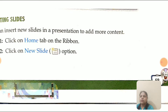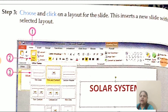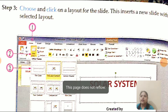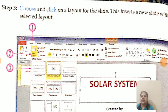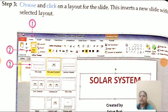Then you will click on New Slide — and the third step is choose and click on a layout for the slide. Many options will open when you click on New Slide; select whichever layout you want for your slide. This inserts a new slide with the selected layout.